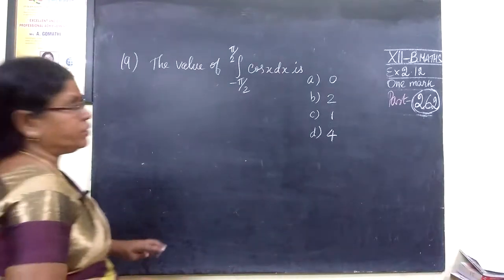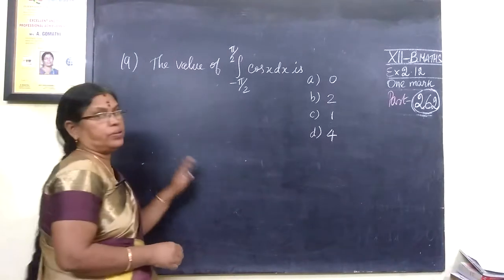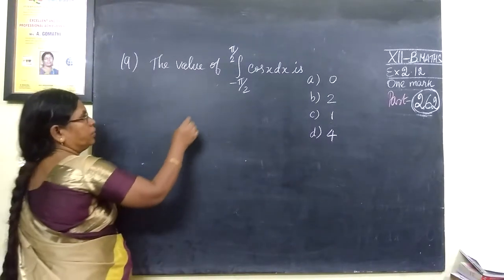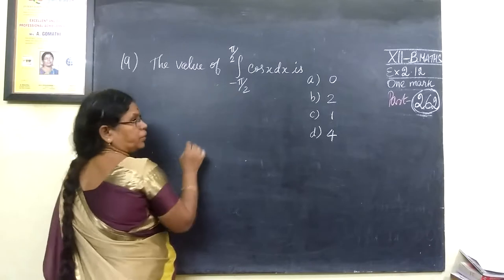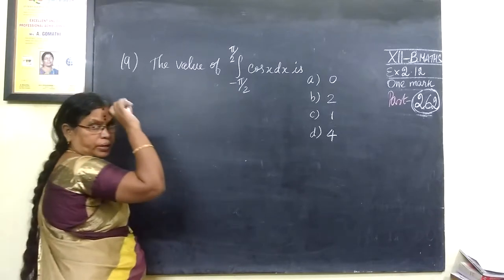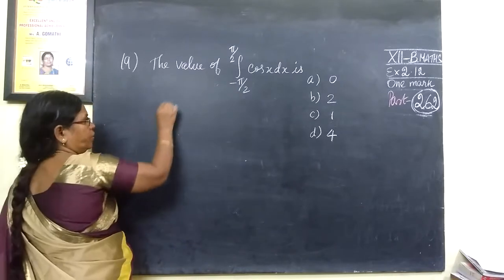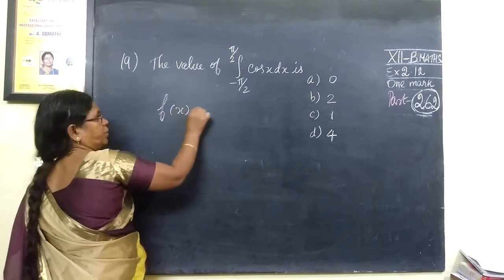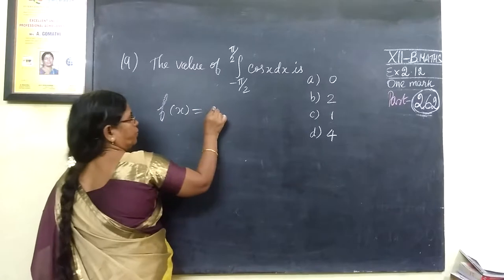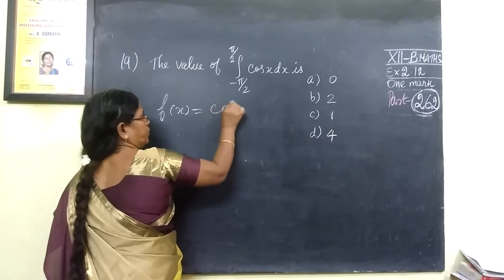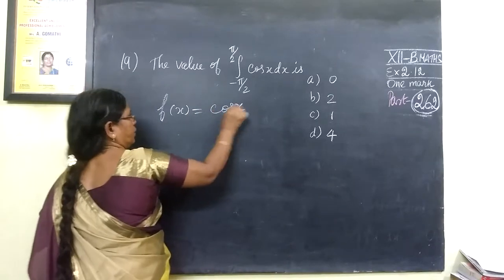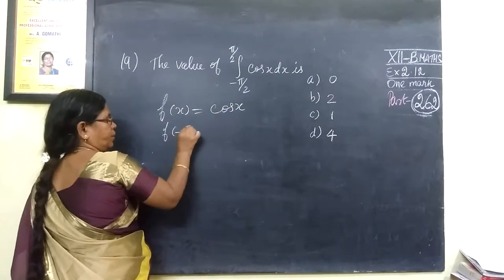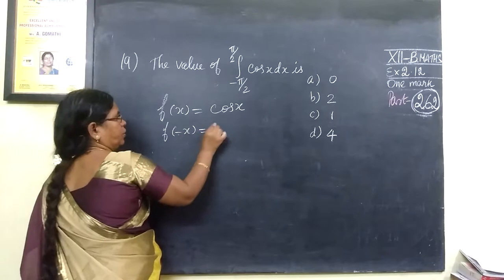So, fellow students, this is our class review, question number 19. In our class review, we are going to say f of x to f of minus x can be passed. f of x equals cos of x, then f of minus x equals.